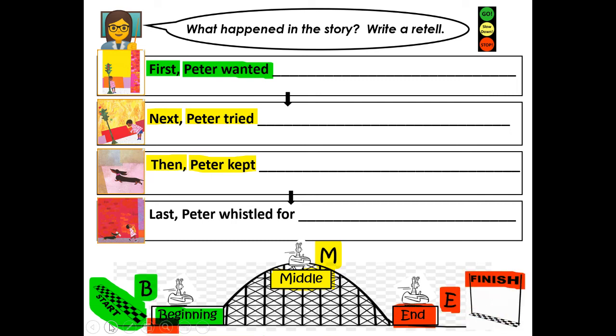Now we're at the end of our retell — the finish line. We're going to say: last, Peter whistled for... Who did Peter whistle for? After you say your sentence, write your last sentence. When you're done writing your last sentence, push play.